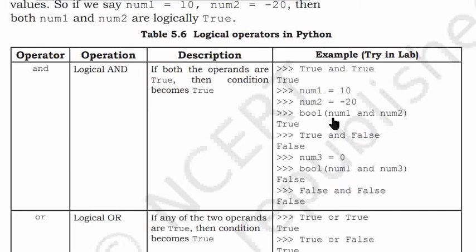bool(num1 and num2): both are true, so final output is true. True and False is False, because one of the values is false. num3 equals 0, bool(num1 and num3): num3 is 0, so final output is false.